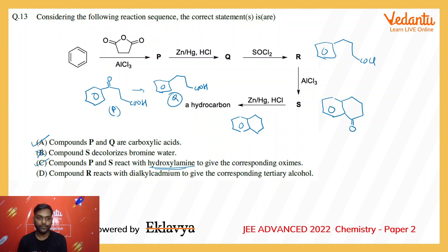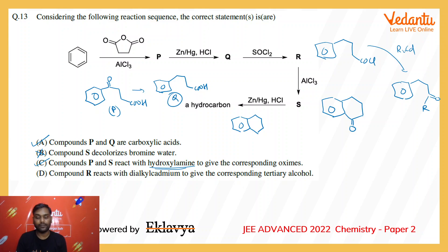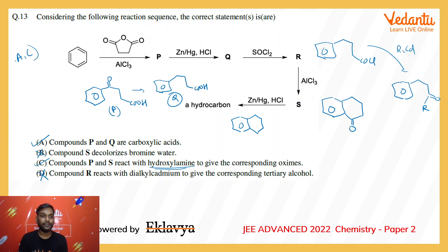Option D says compound R reacts with dialkyl cadmium to give the corresponding tertiary alcohol. If you react R with dialkyl cadmium, it will give a ketone. Ketones are not further reactive towards dialkyl cadmium because the cadmium-carbon bond is not as polarized as compared to a Grignard reagent. If it were a Grignard reagent, it would have further reacted to form a tertiary alcohol, but that is not going to happen with dialkyl cadmium. So option D is also not correct. The correct answer for this question is A and C.